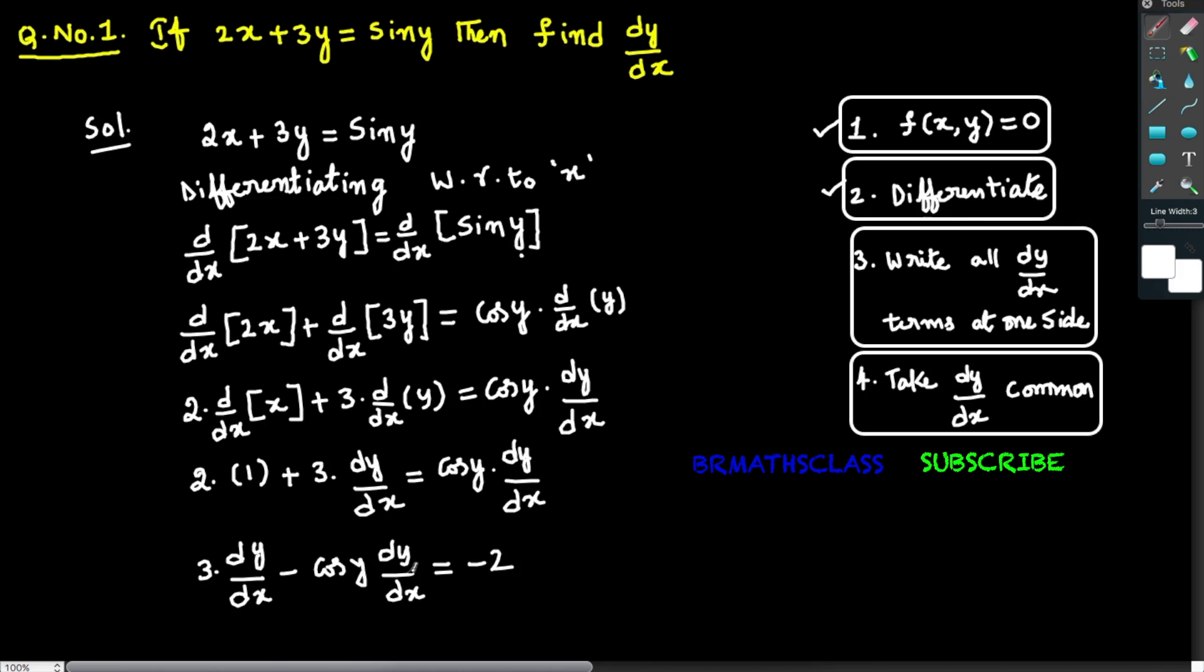From this equation, we will take dy by dx common. If you take dy by dx common, then you will get dy by dx into 3 minus cos y equal to minus 2. Actually, we need to calculate dy by dx. From this, you will get dy by dx is minus 2 divided by 3 minus cos y.